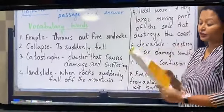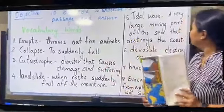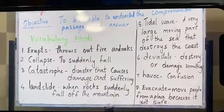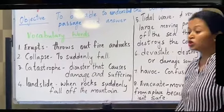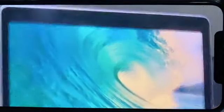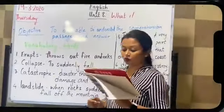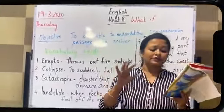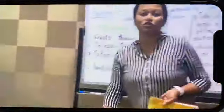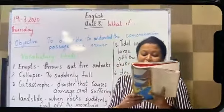As you are reading the comprehension, you can look at the map. What do you mean by a tidal wave? A tidal wave is a very large moving part of the sea that destroys the coast — it is a very huge and very strong wave. And the word devastate means it destroys many things. This kind of wave, which is very strong, destroys many things on land.